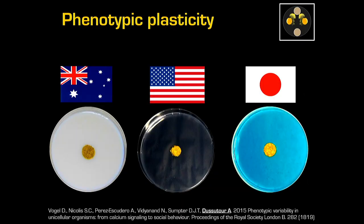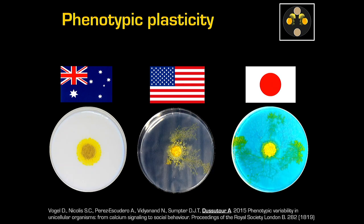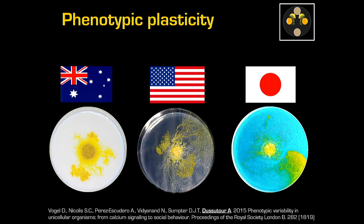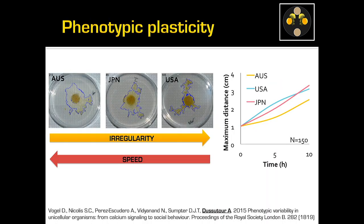Next, phenotypic plasticity. Unlike ant research where you use many colonies, in slime mold research people always use one clone lineage. I compared different clone lineages in a simple exploration task. The Japanese strain is far quicker than others. The U.S. strain makes very tiny pseudopods and is the fastest but most irregular. The Australian strain grows isotropically for a very long time before producing pseudopods, and it's very slow.